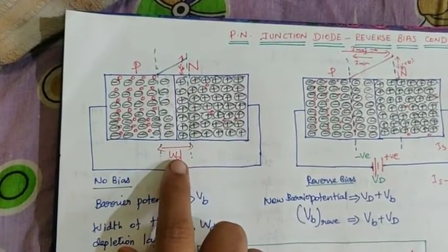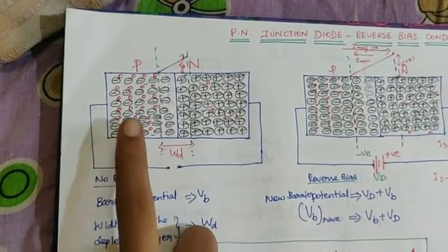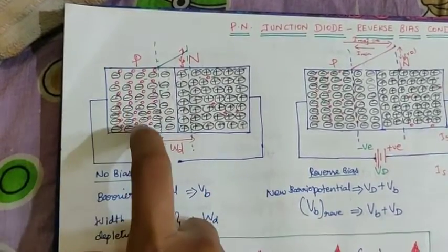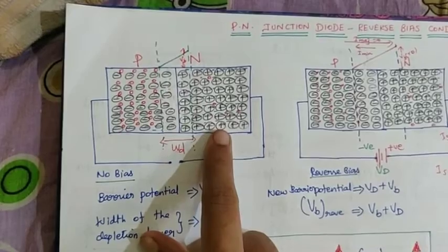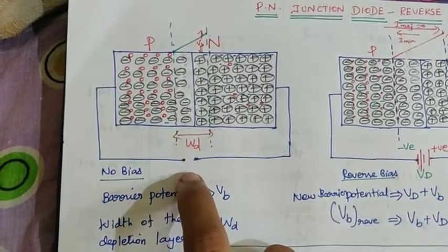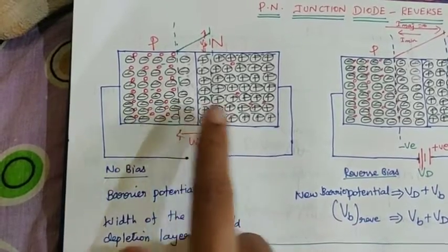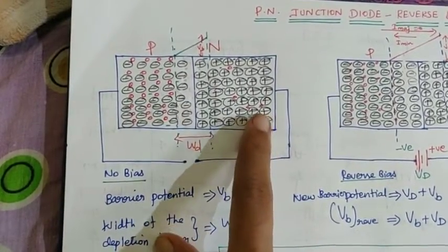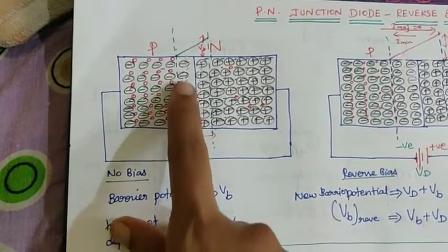This barrier voltage is generated. How did it generate? I will tell you a brief explanation from our previous video. In P-type, holes are majority charge carriers and electrons are minority charge carriers. In N-type, electrons are majority charge carriers and holes are minority charge carriers. Under no bias condition, in P-type, holes are at high concentration, and in N-type, electrons are at high concentration.